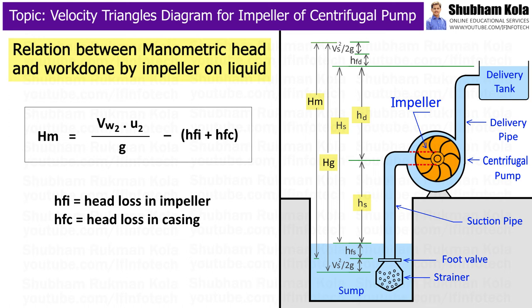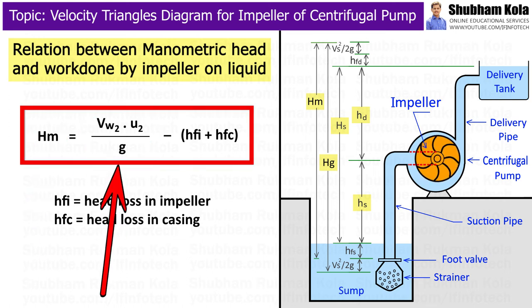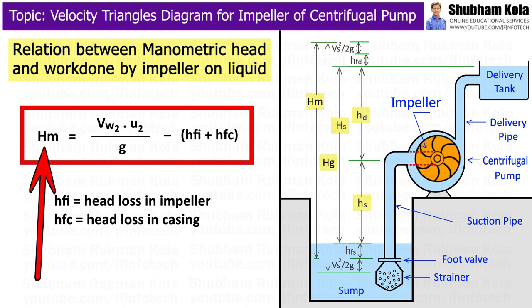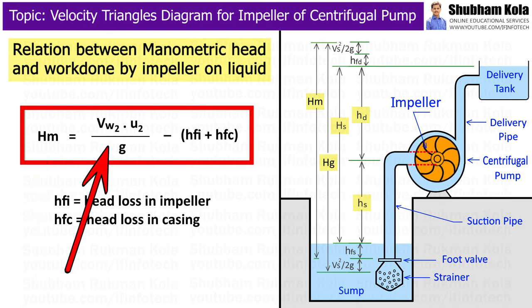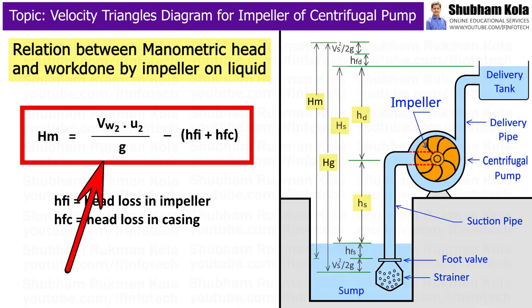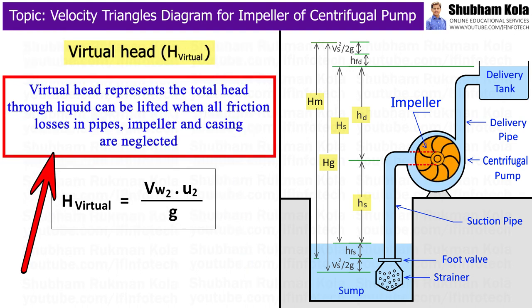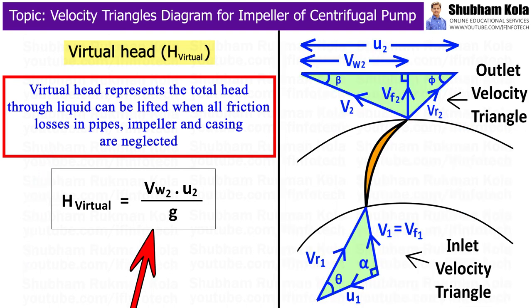The relation between manometric head and work done by impeller on liquid is: manometric head HM = (Vw2 × U2 / g) − loss of head in impeller and casing. Virtual head represents the total head through which liquid can be lifted when all friction losses in pipes, impeller, and casing are neglected. Therefore, virtual head = Vw2 × U2 / g.